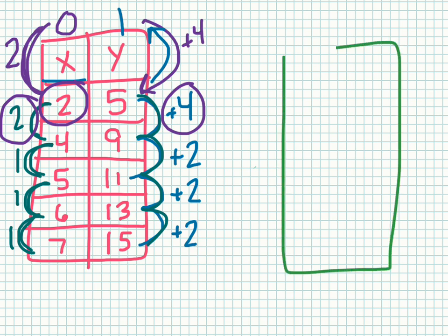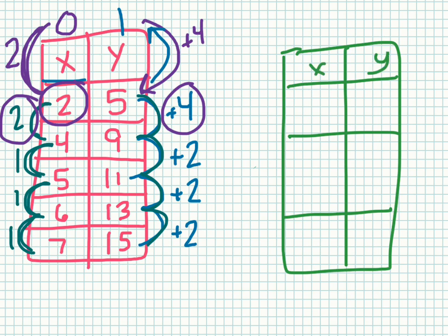And I'm going to check myself with a little table over here. I'm just going to maybe try out 3 of the values. I now have that when x is 0, y is 1. When x is 2, y is 5. And when x is 7, y is 15.